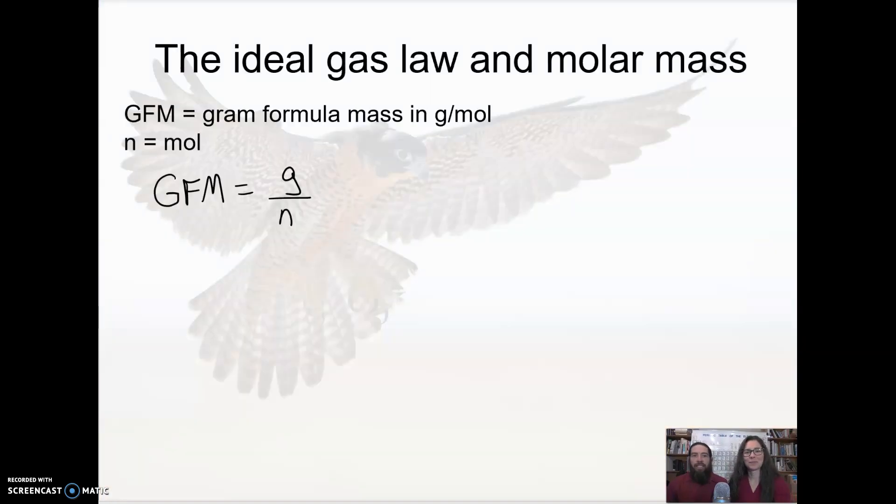So let's start with the molar mass and the first thing we need to do is think about what is molar mass. We're going to represent molar mass as GFM which is gram formula mass. This is the same molar mass you get off the periodic table. It's the number of grams in one mole. Those are our units, grams per mole. We use the symbol n, the little n, in our ideal gas law to represent moles. So we could say our gram formula mass is equal to grams G over little n, grams per mole.